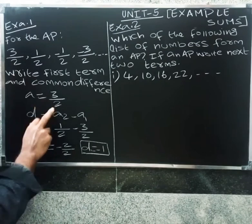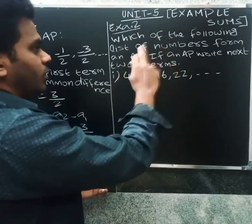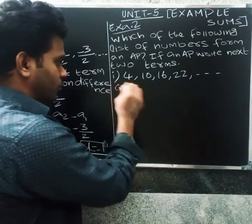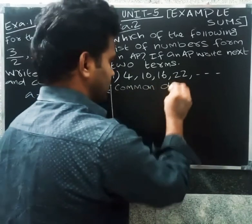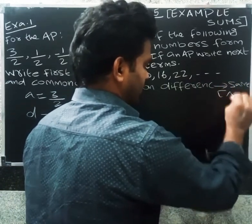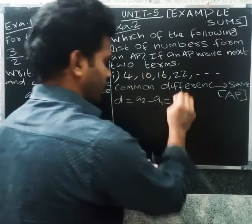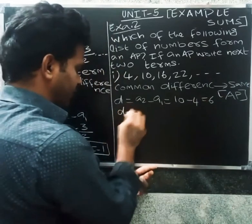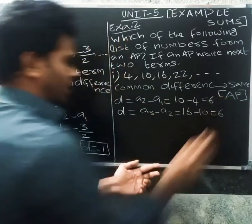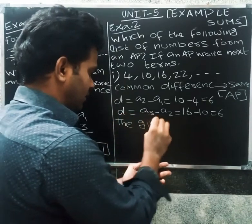So the second term minus the first term: 1 by 2 minus 3 by 2 equals minus 1. That is the difference. Second question, Example 2: which of the following list of numbers form an AP? If an AP, write the next 2 terms. For AP, the common difference must be the same. Common difference equal to A2 minus A1: 10 minus 4 equals 6. Next, A3 minus A2: 16 minus 10 equals 6. The common difference is the same, therefore the given numbers form an AP.